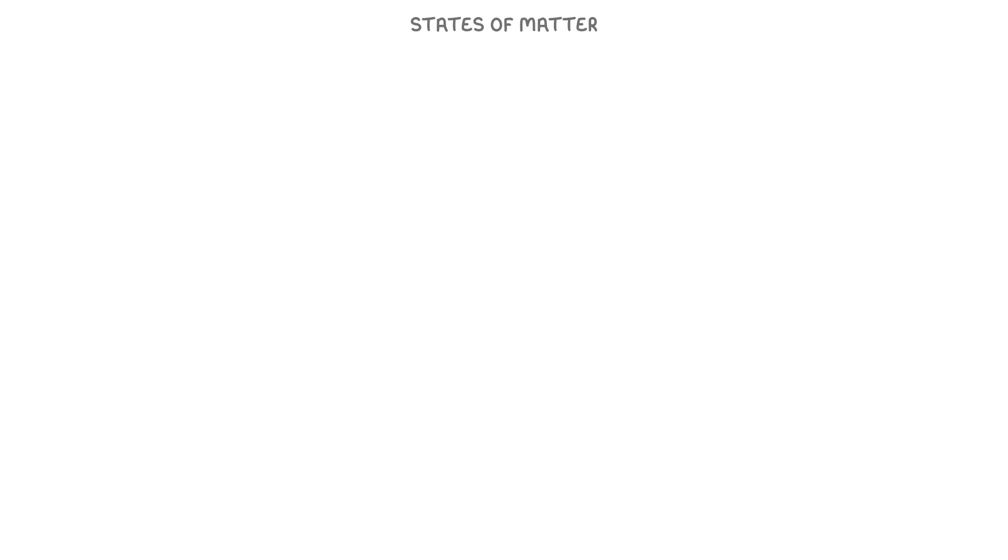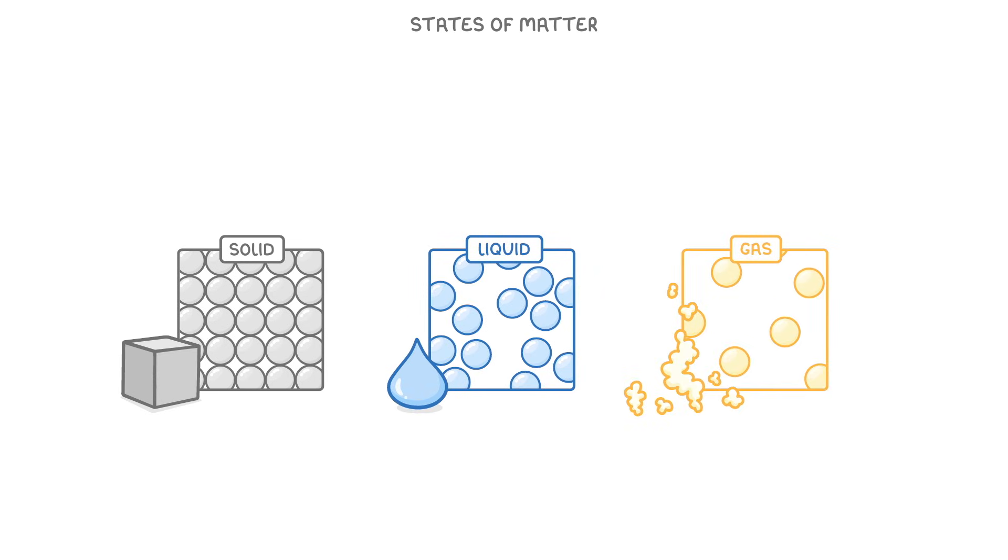In this video we're going to look at the three states of matter: solid, liquid, and gas, and see how substances can change from one state to another. To do this we're going to use a model called particle theory, or sometimes kinetic theory.